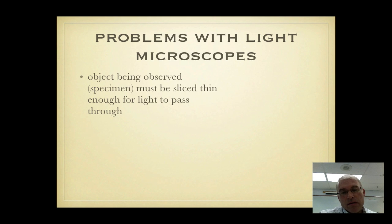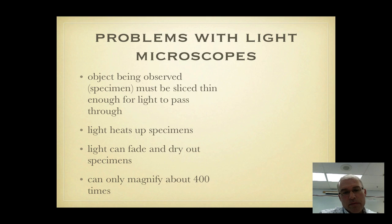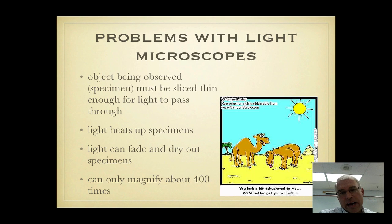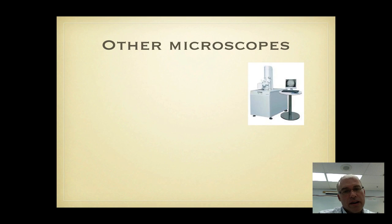Problems with light microscopes overall are that the specimens that you're looking at have to be cut very thin in order for light to pass through them. And when you shine light on something, the light usually heats it up and heat can fade and dry out specimens. And light microscopes can only magnify about 400 times. The problem of drying is also called dehydration and you'll see that in lab when we make some wet mount slides.